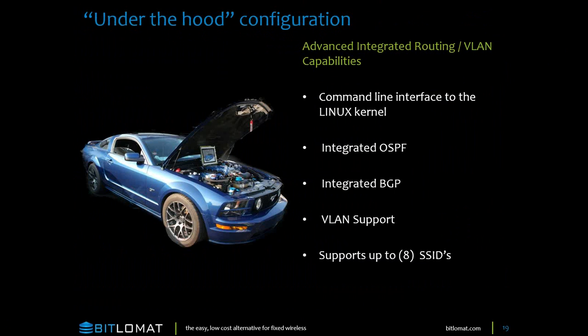Under the hood, if you are a Linux geek you can log into the command line. We added Quagga, so if for whatever reason you needed OSPF or BGP, you could access that. Most things we can do through the GUI, but you can get to those advanced routing features through the command line. VLAN support and eight SSIDs are available through the web GUI — eight SSIDs is something our primary competitor does not offer.